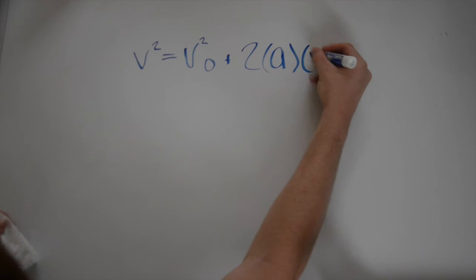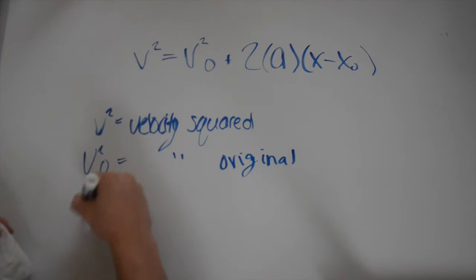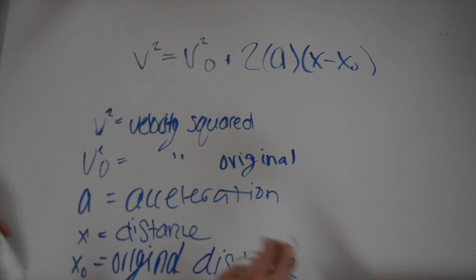The third formula is V squared equals V₀ squared plus 2A times (X minus X₀). V squared equals velocity squared, V₀ squared equals velocity squared original, A equals acceleration, X equals distance, and X₀ equals the original distance.